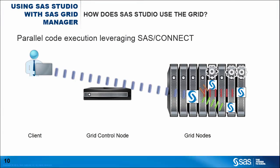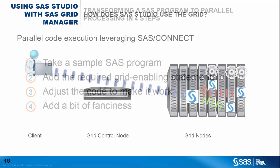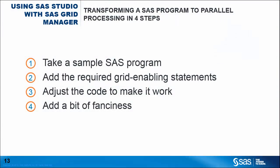Now, let me show you some more possibilities. What about parallelization? How to split code to run across multiple nodes so that the overall runtime can be dramatically reduced? I will not bother you with all the theory — that's available in the online documentation. Instead, I will show you live how to transform a SAS program into parallel processing in four steps.